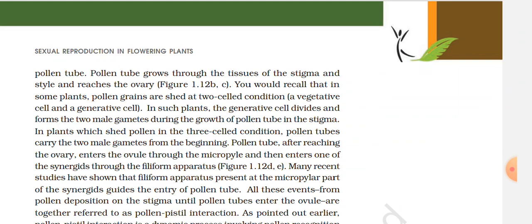In some plants, pollen grains are shed at the two-celled condition — a vegetative cell and a generative cell. In such plants, the generative cell divides and forms the two male gametes during the growth of the pollen tube. In plants which shed pollen in the three-celled condition, pollen tubes carry the two male gametes from the beginning. The pollen tube, after reaching the ovary, enters the ovule through the micropyle and then enters one of the synergids.